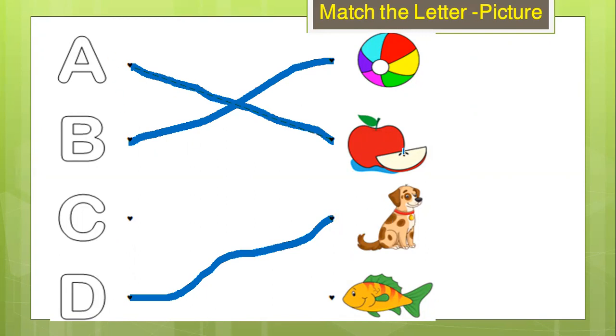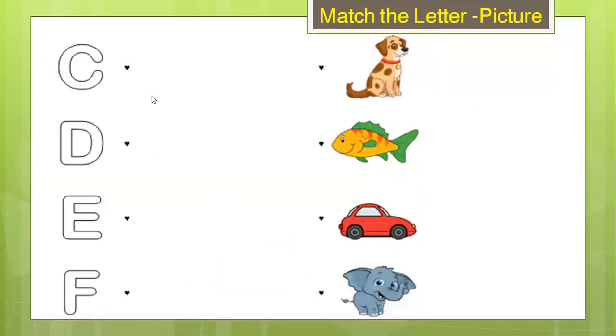So A for Apple, B for ball, D for dog. I know C here. C for car. I saw a car here. It's a car. It's a red car, right?